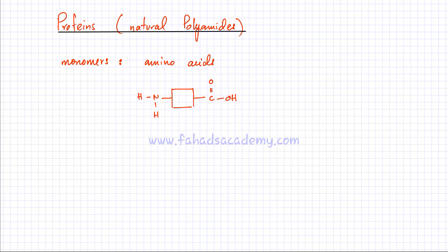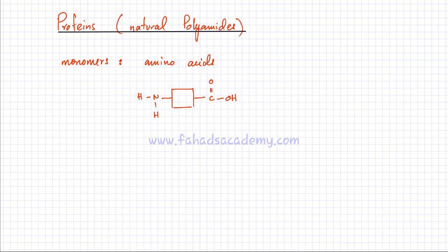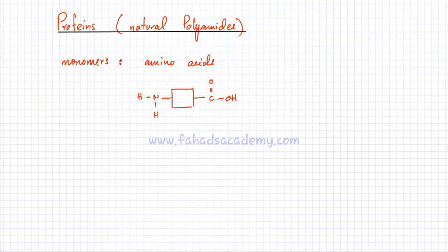Compare this with the monomers of normal polyamides like nylon and Kevlar — synthetic polyamides. In that case, you had an amine group on both sides and a carboxylic acid group on both sides. But an amino acid has a carboxylic acid group on one side and an amine group on the other side.